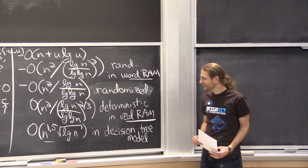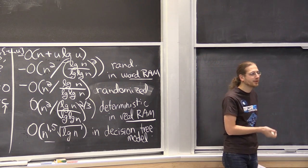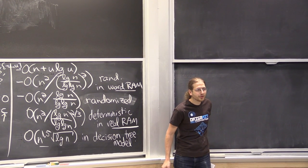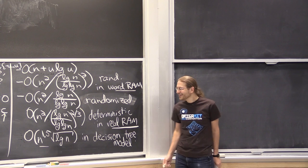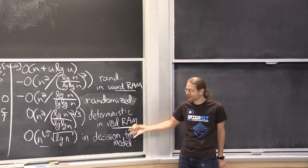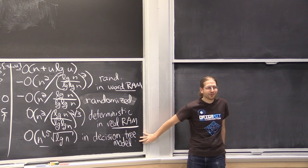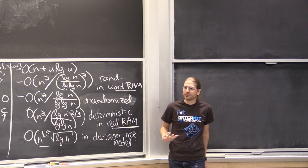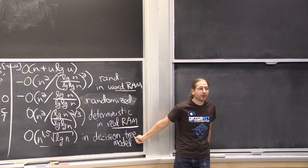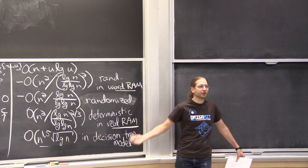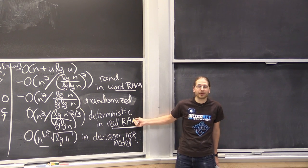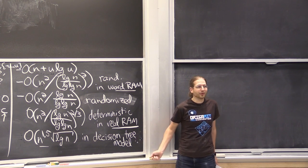A student asks why we should care about the decision tree model. The answer is: decision trees are not a model of a reasonable computer. But they're interesting because the result gives a tantalizing feeling that maybe you could turn it into a real algorithm. If you don't know what the decision tree is, you can't run it. Decision trees are traditionally used as a lower bound model — if you can prove a lower bound there, it implies lower bounds in the real RAM. This result says you can't prove a strong lower bound in that model, which is annoying.